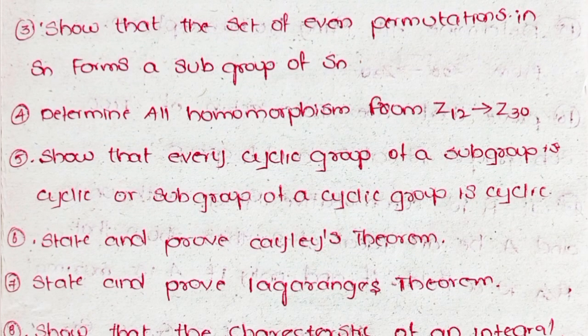Third, show that the set of even permutations in Sn forms a subgroup of Sn. Fourth, determine all homomorphisms from Z12 to Z13. Fifth, show that every subgroup of a cyclic group is cyclic.